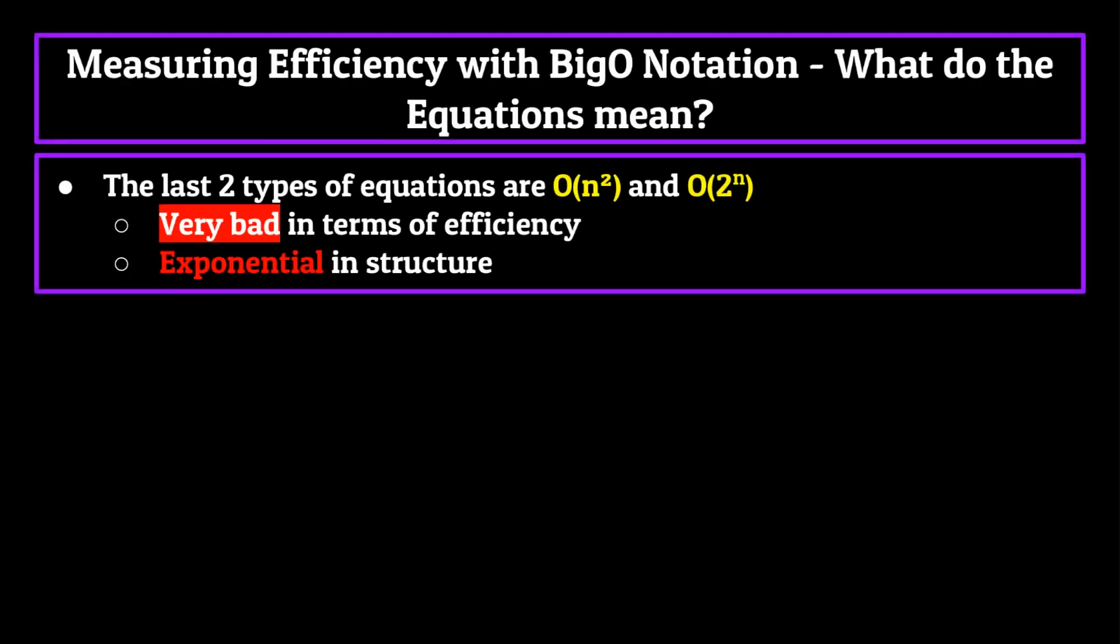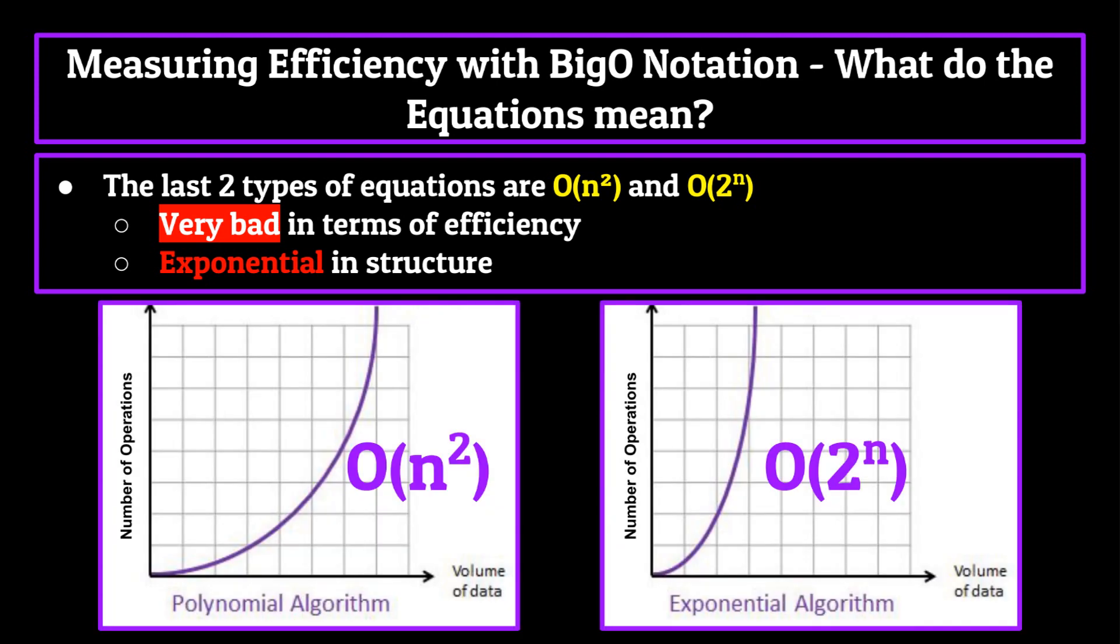The last two types of equations are O of n squared and O of 2 to the n. These are both incredibly inefficient equations which should be avoided if at all possible. Because they are both exponential in structure, which can be seen from their graphs of volume versus operations needed, the larger the data set you use, the more inefficient it will become. While there are more equations that exist, such as O of n factorial, which is even worse than the two I just mentioned, the data structures we'll be talking about will never have time complexity equations that exist outside of the five we just covered, so we're going to stop there.